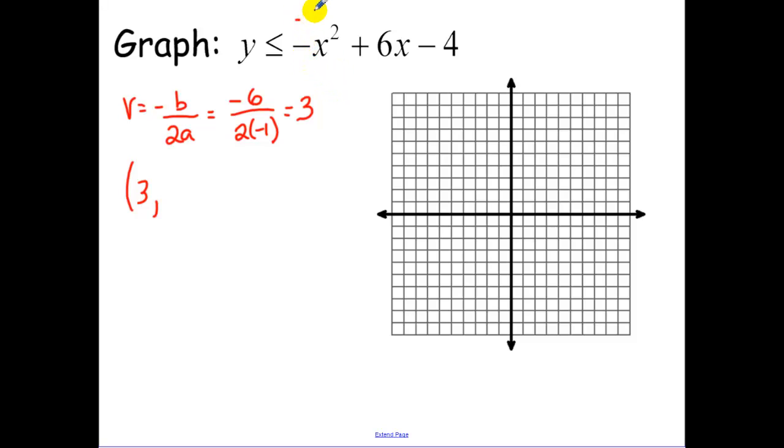I have a negative 3 squared plus an 18 minus a 4. So we're going to have negative 9 plus 18 minus 4. So that's going to get me a positive 5. So I put down my point.